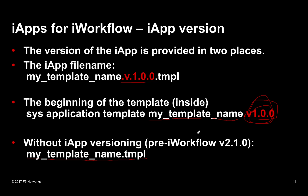This helps iWorkflow understand which version of the template, because you might iterate the template and add new features or change the way it behaves or interacts with other services. It's really important to add this version rather than just a flat name. How do you know if it got upgraded on box A versus box B? This was demanded by our customer base. Prior to iWorkflow 2.1.0 you didn't have to have it, but from 2.1.0 onwards you're going to need to put it in there for iWorkflow to acknowledge your work.